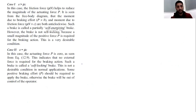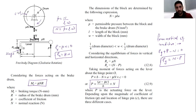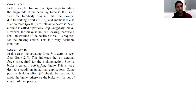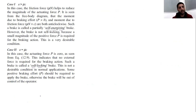Case two: if a equals μc, then the numerator becomes zero, so P equals zero. This means the actuating force is zero — the drum gets stopped without applying any force. This is called the self-locking condition. This is not a desirable condition in normal applications, as it takes the brake out of the operator's control.